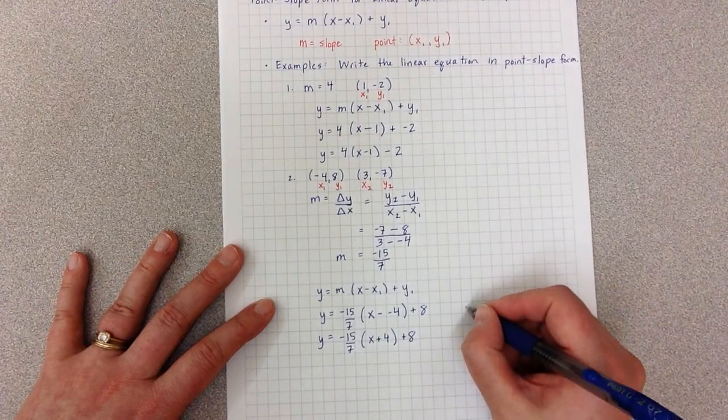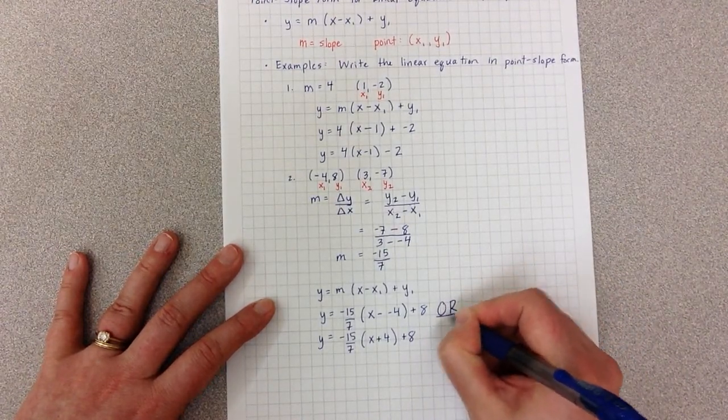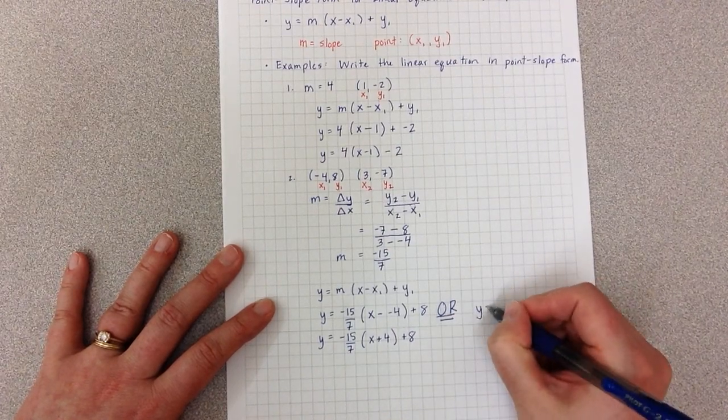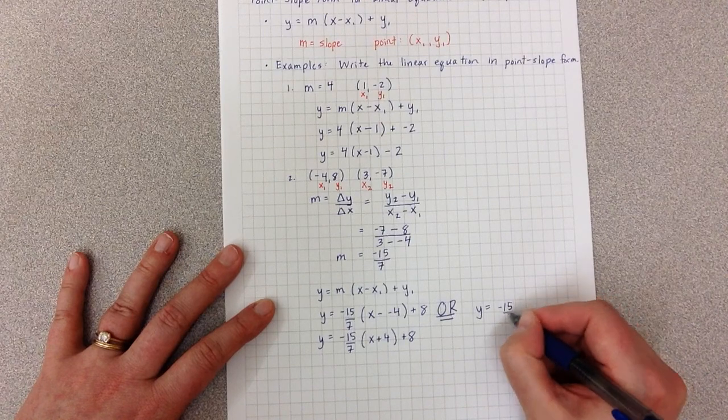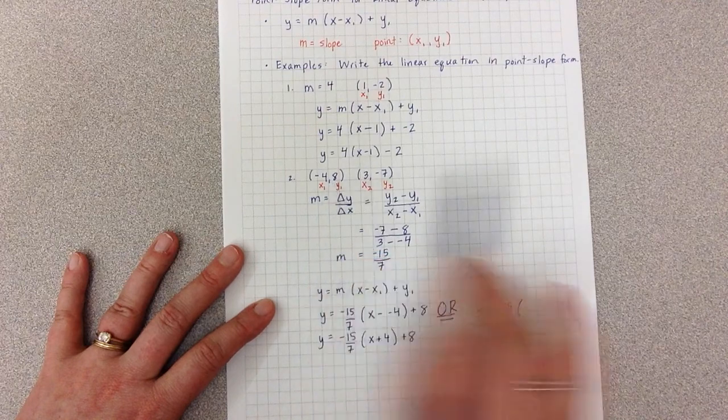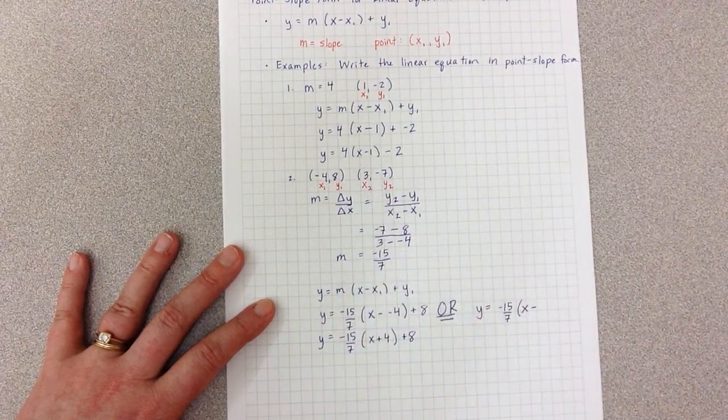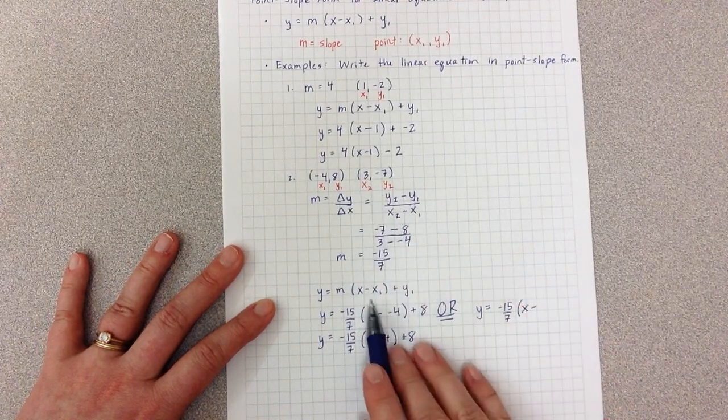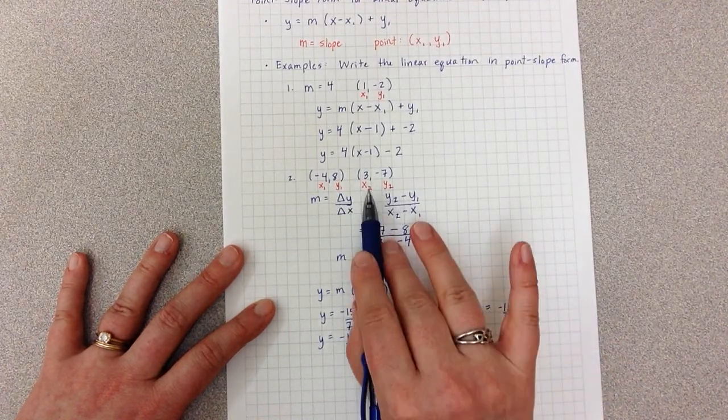I can also use the second point. I'm going to put a big or here. I could have said, I'm going to say y equals, my slope is my slope, so negative 15 over 7. But instead of using the point negative 4, 8, I am going to use the point 3, negative 7.